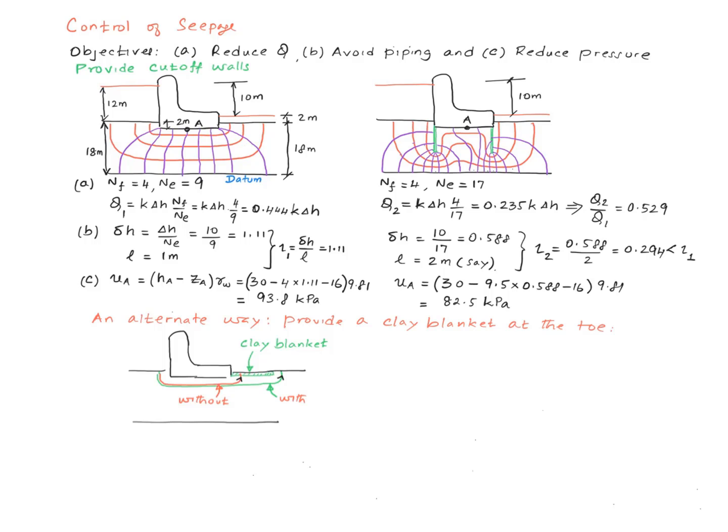I also want to point out that the same effect can be realized by providing what is called a clay blanket, basically an impermeable blanket built at the toe over a certain length. Now the water that comes from the upstream, instead of coming out at the toe, is going to have to flow around the blanket and come out at a certain distance. Therefore, you have lengthened the flow line, which increases the number of equipotential drops, and it has the same effect as we have observed in this method where we have provided cut-off walls.